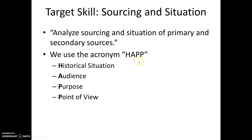Whenever you see HAP, this is what it stands for: Historical situation, Audience, Purpose, and Point of view. These are four things to consider whenever you're looking at a primary or secondary source — primary being directly from the time period, secondary meaning it was compiled later. Keep in mind there will be times where we look at all of these for a document, and there may be times when we just look at one or two.